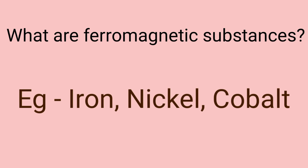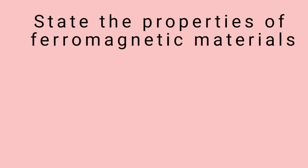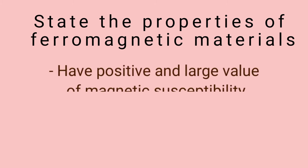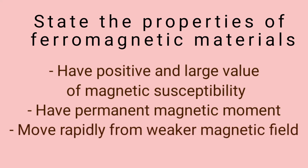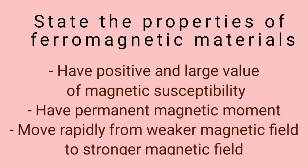Since this entire experiment deals with ferromagnetic materials, they can possibly ask you to state some properties of ferromagnetic substances. The properties are: they have a positive and large value of magnetic susceptibility; they have a permanent magnetic moment; and in a non-uniform magnetic field, they will rapidly move from a weaker magnetic field to a stronger magnetic field.